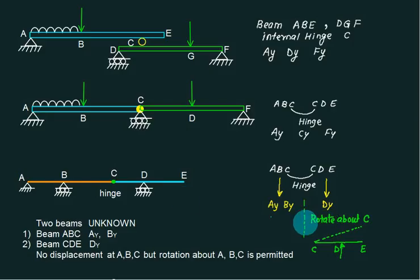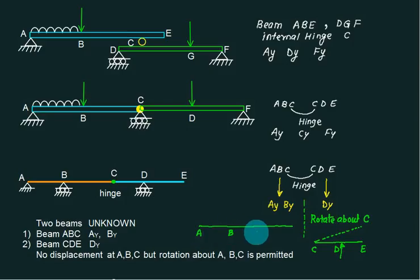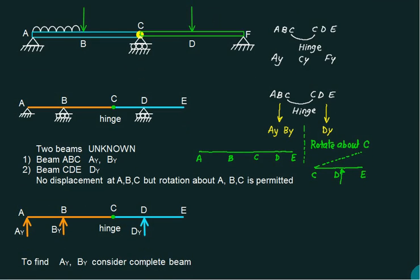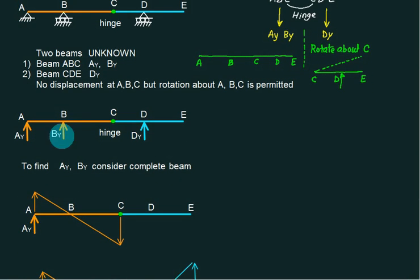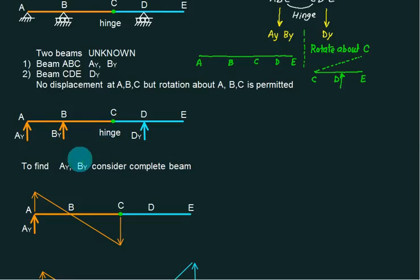Once you finish with DY, come to the ABC part. When you solve for ABC you have to consider the entire beam — that is A, B, C, D, and E. When you consider ABC, how many unknowns? AY, BY, and DY. To find AY and BY you have to consider the complete beam. When considering the complete beam, first consider only the AC part.